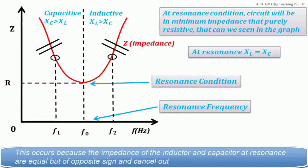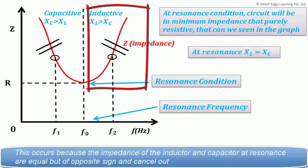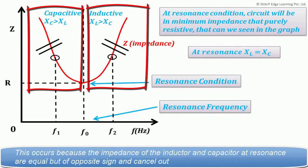This occurs because the impedances of the inductor and capacitor at resonance are equal but of opposite sign and cancel out.